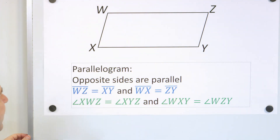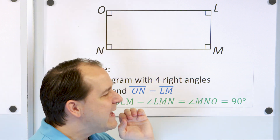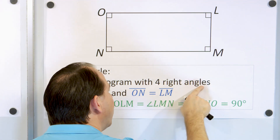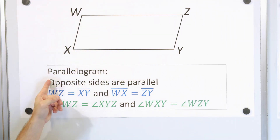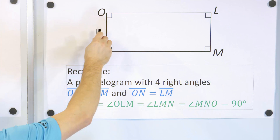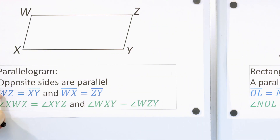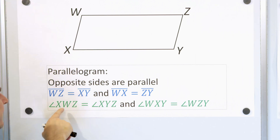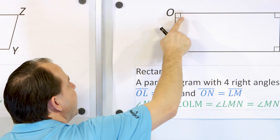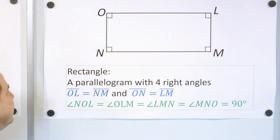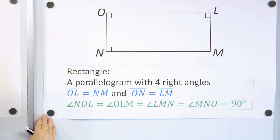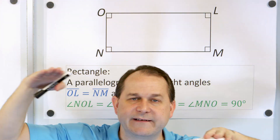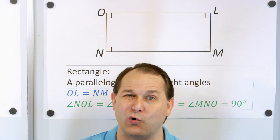Now keep that in mind and let's compare that to what a rectangle is. A rectangle is a type of parallelogram — a rectangle is a parallelogram with four right angles. Because a parallelogram means opposite sides have to be parallel — check. Opposite sides have to be equal length — check. Opposite angles are equal — check. The only difference between a rectangle and a parallelogram is you have four right angles, making that rectangular shape with perpendicular 90-degree angles in every single corner.